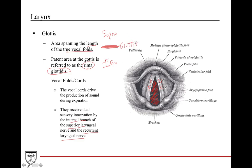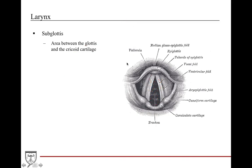The glottis receives innervation by both the internal branch of the superior laryngeal and the recurrent laryngeal. Everything above the glottis — the supraglottis — gets the internal branch, and everything below — the subglottis — gets the recurrent laryngeal branch. The subglottis is the area between the glottis and the cricoid cartilage, and this is what receives recurrent laryngeal innervation.